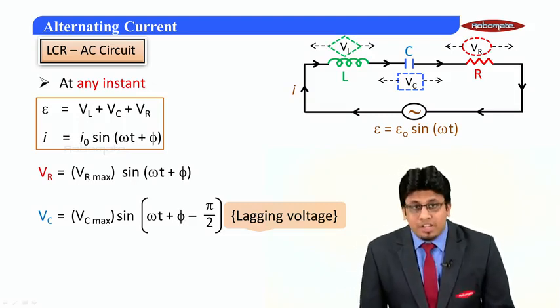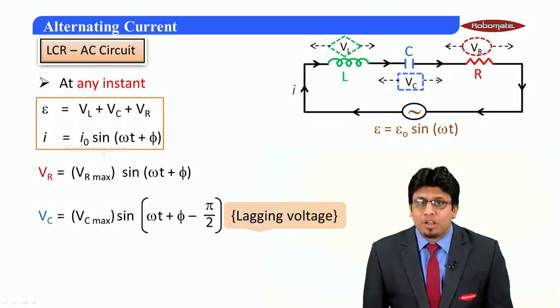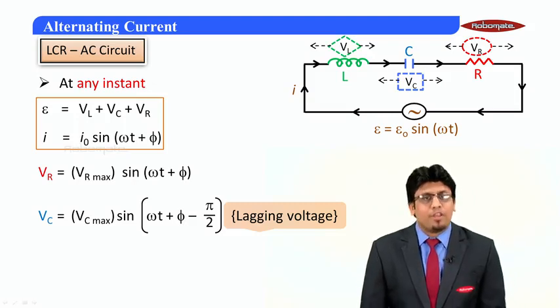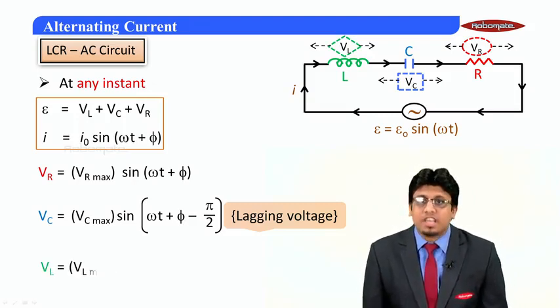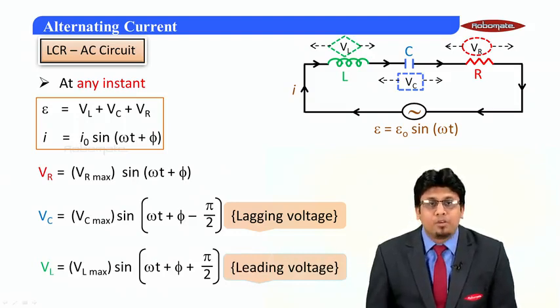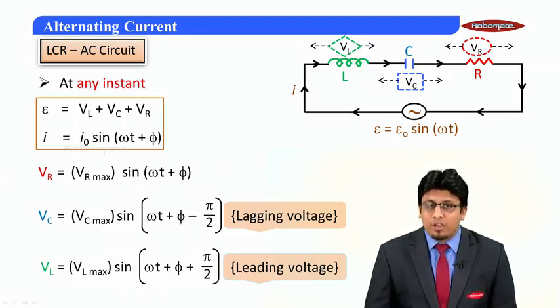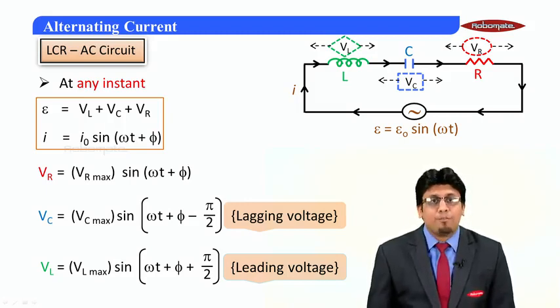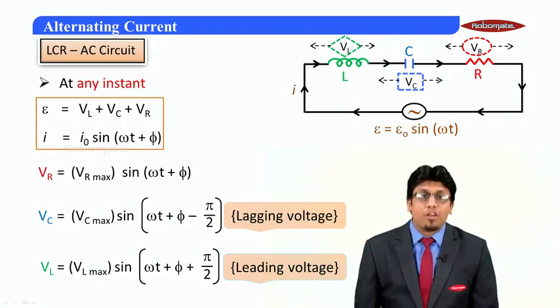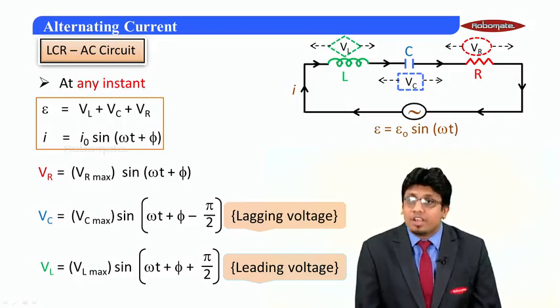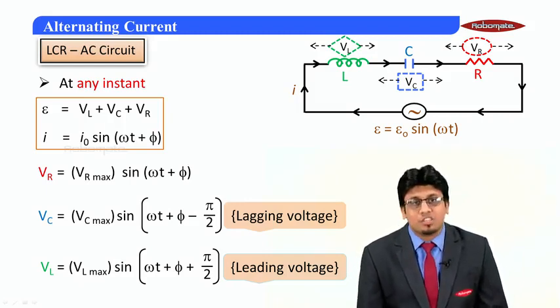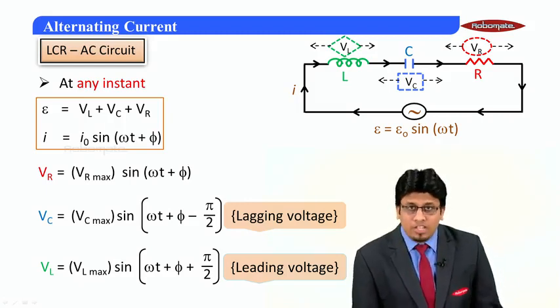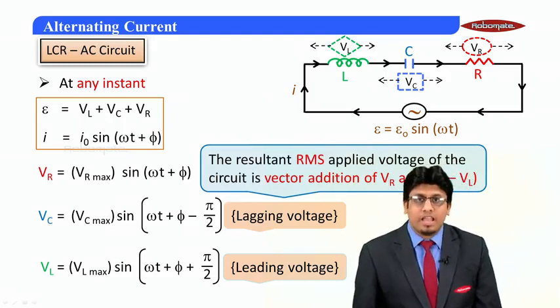Now if we take inductor for example, what we will get is that the current actually lags behind the voltage, and therefore if the current is the reference then we can say that the voltage leads ahead by an angle of π/2. And therefore in the angle value of the sine we will get ωt + φ + π/2. So please note here we are discussing if we take the current as the reference. In all our previous discussions we have taken the voltage as the reference. Now let us continue our discussion about this LCR circuit.